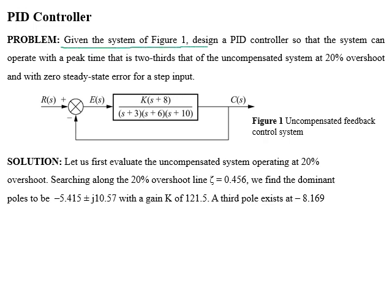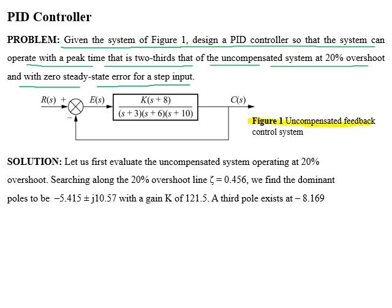We will design a PID controller so that the system can operate at a peak time that is two-thirds of the uncompensated system, with 20% overshoot and zero steady-state error for a step input. The forward path of the system has one zero at location minus 8 and three poles at locations minus 3, minus 6, and minus 10 in the S-plane.